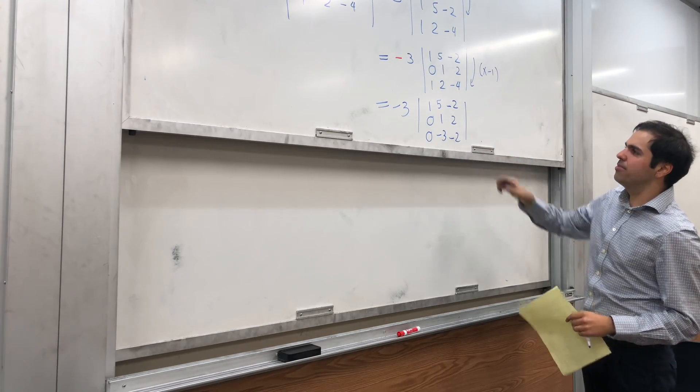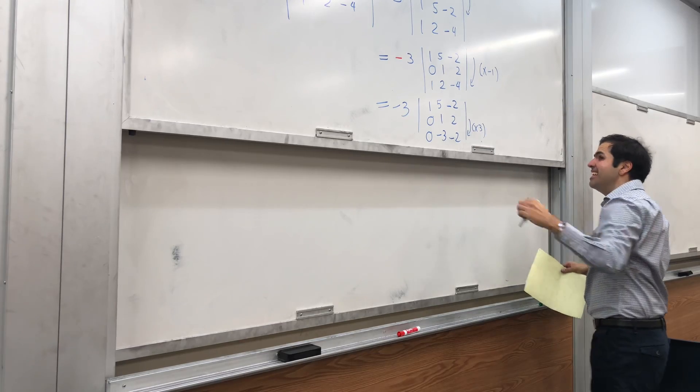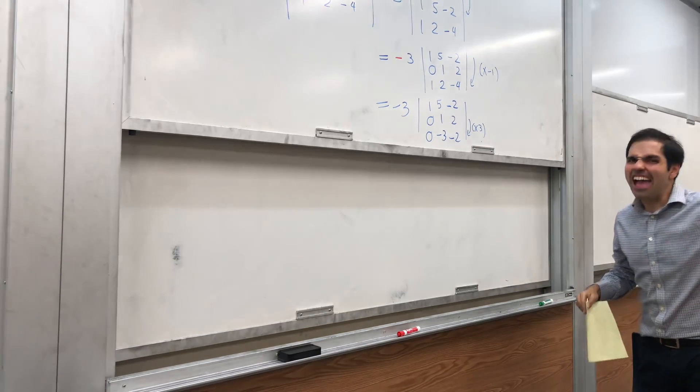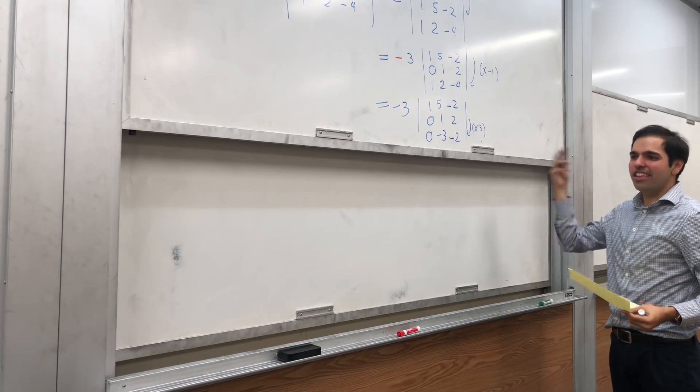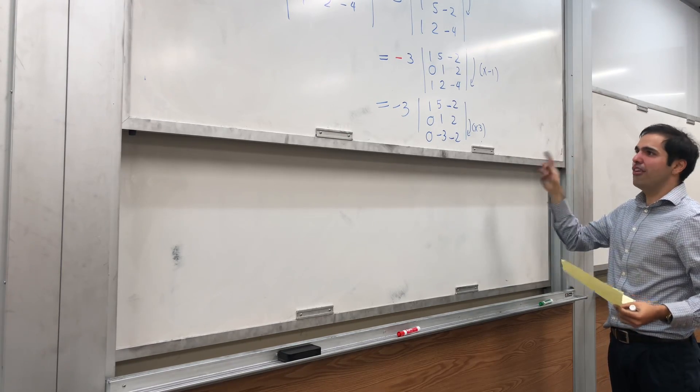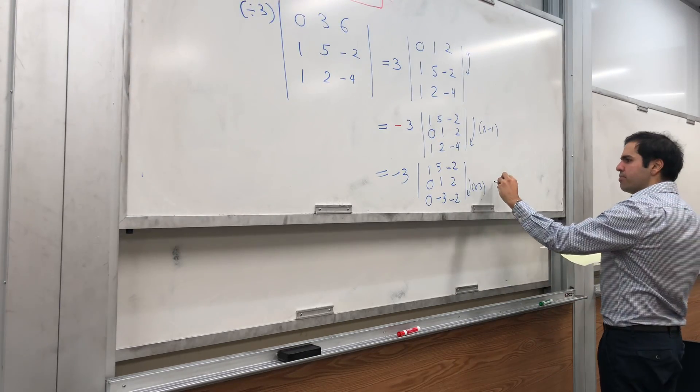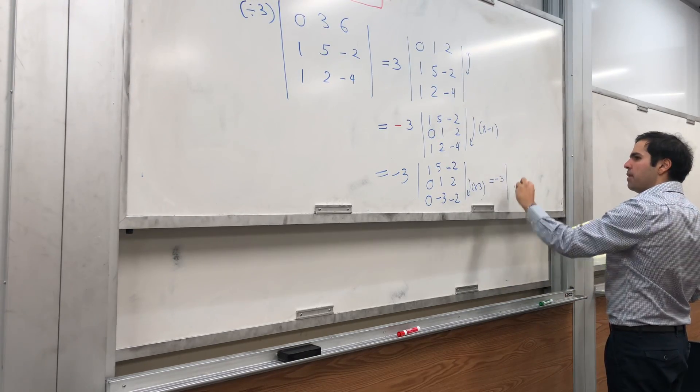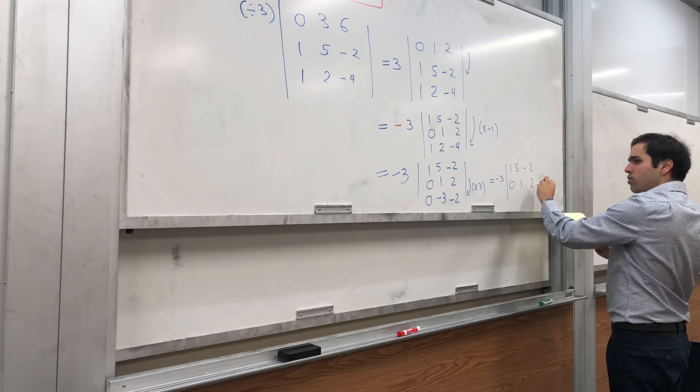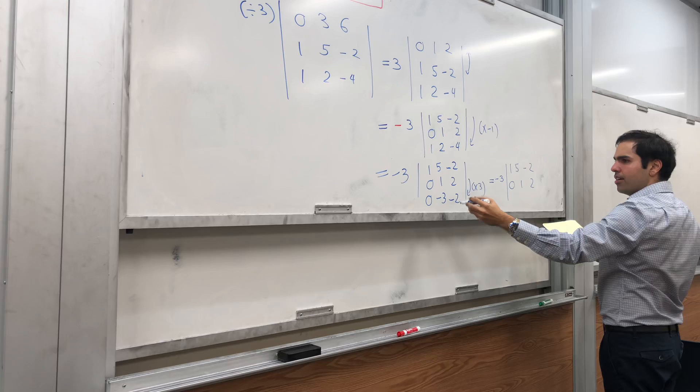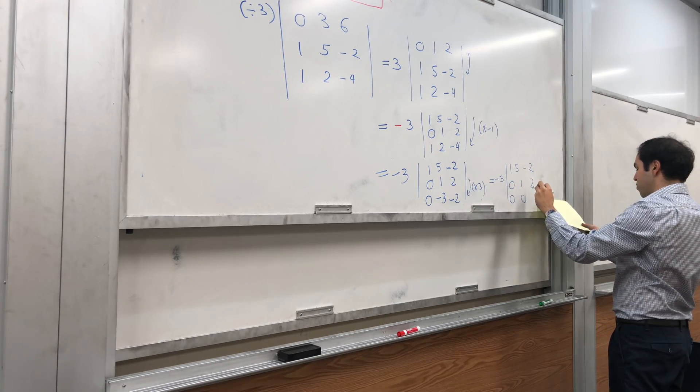now you want to add 3 times this row to this row, and again it doesn't do anything to the determinant. So this is kind of cool—the thing you do most doesn't affect the determinant at all. So then what you get is simply -3 times the determinant of 1 5 -2, 0 1 2, and you get 0 0, 6 minus 2 which is 4.